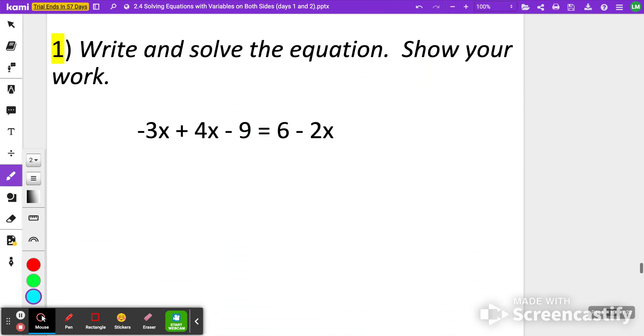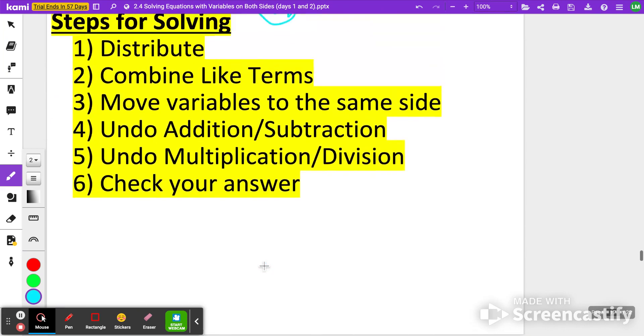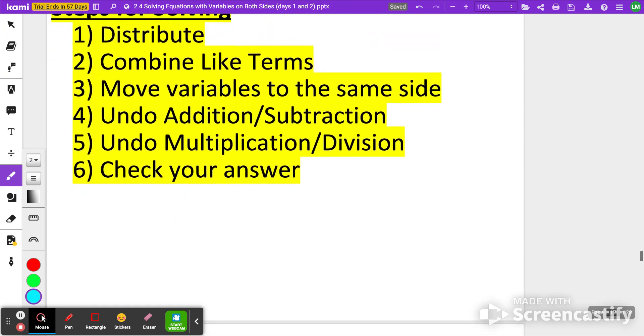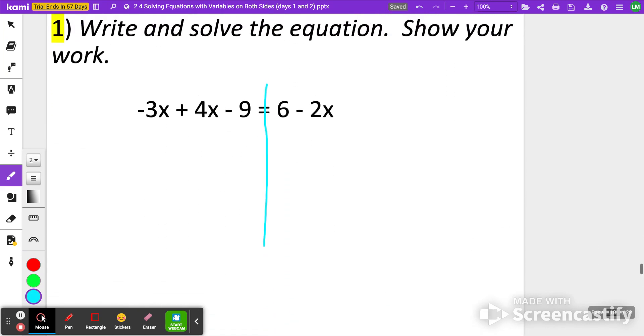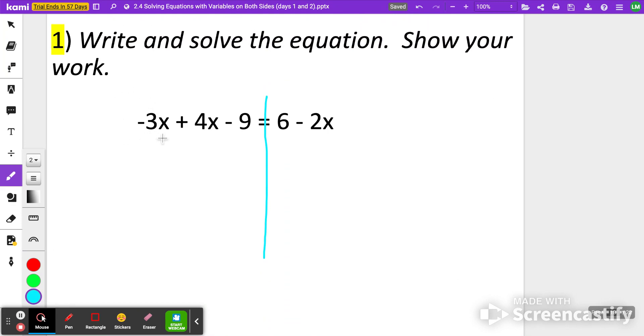All right, writing and solve the following equation. The first thing I'm going to do is from my steps, it says to distribute. I don't have anything to distribute, but I do have step two, which is combining like terms. If you look here on the left-hand side, I have a negative 3x plus 4x. That's going to be a 1x minus 9 is equal to 6 minus 2x.